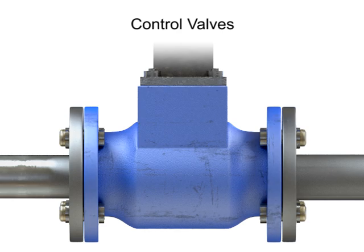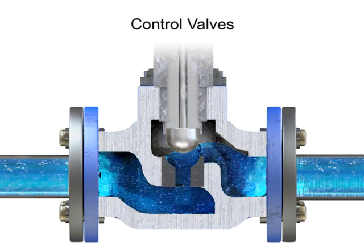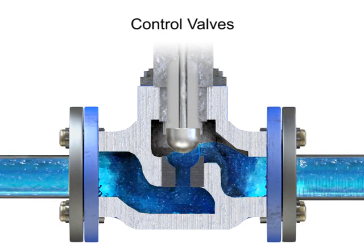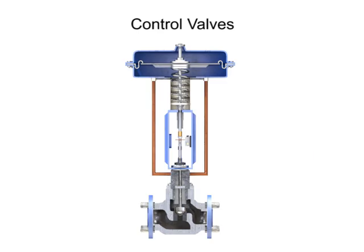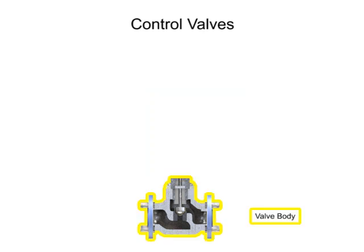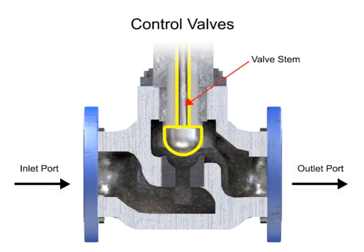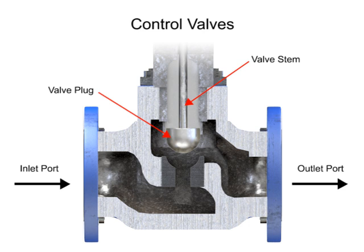Control valve actuators control fluid in a pipe by varying the orifice size through which the fluid flows. Control valves contain two major components: the valve body and the valve actuator. The valve body provides the fluid connections and a movable restrictor, comprised of a valve stem and plug that is in contact with the fluid that varies the flow. The valve actuator is the component that physically moves the restrictor to vary the fluid flow.